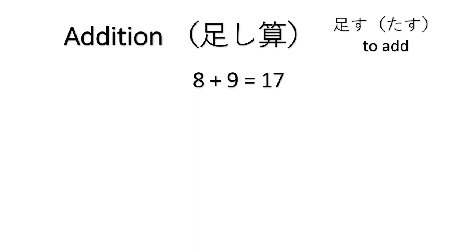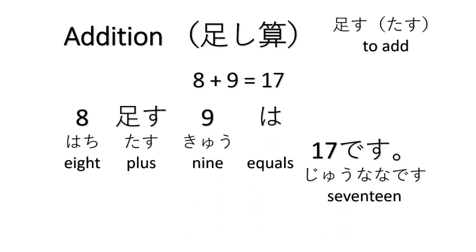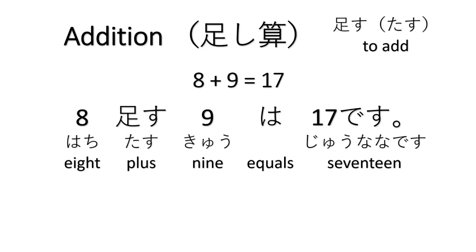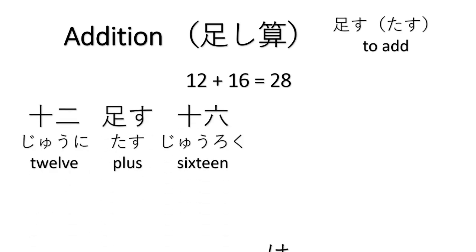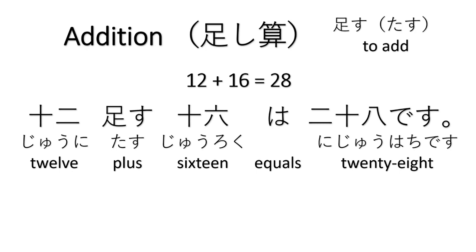Eight plus nine equals seventeen. Hachi tasu kyu. We can also write the Arabic numeral instead of the Japanese numeral. Hachi tasu kyu wa juu nana desu. Eight plus nine equals seventeen. Twelve plus sixteen equals twenty-eight: juu ni tasu juu roku wa nijuu hachi desu.